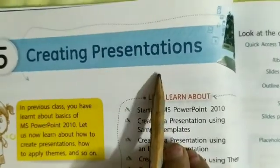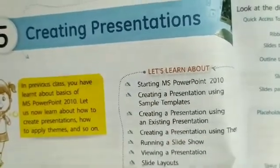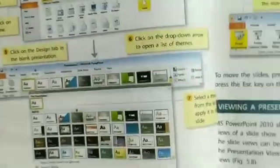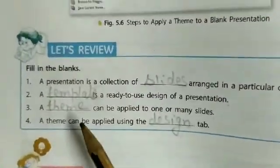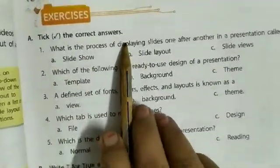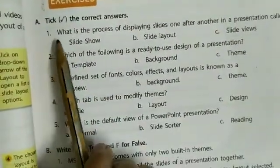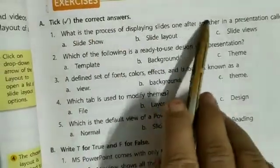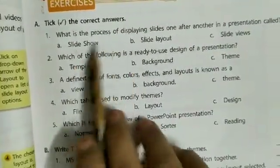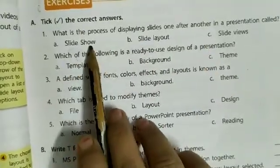Lesson number five: creating presentations. In this chapter we have done explanation, fill in the blanks, and question answers. Now today in this video we will do some exercises — choose the correct answer. You have to write the statement with blue pen and write only the correct option out of three options using black pen.